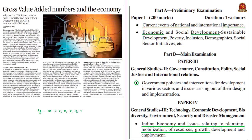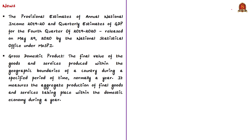This article is with reference to estimates of annual national income and quarterly estimates of GDP, recently released by the National Statistics Office, which functions under the Ministry of Statistics and Program Implementation. The article talks about Gross Value Added (GVA), GVA at basic prices, GVA at factor cost, and Gross Domestic Product. These terms are very important for prelims and are considered fundamentals in economics. GDP is defined as the final value of goods and services produced within the geographical boundaries of a country during a specified period of time, normally one year.